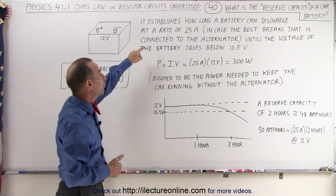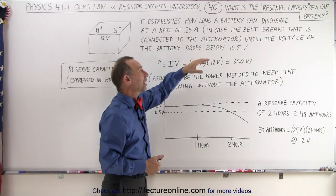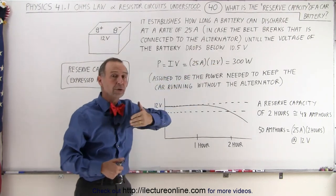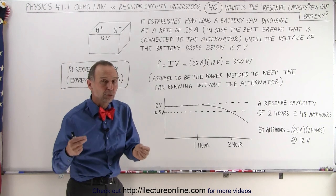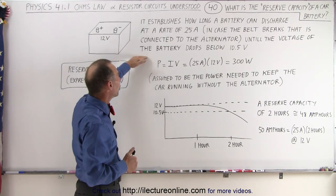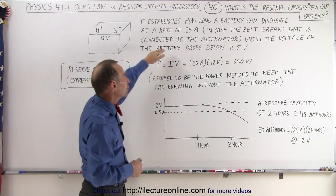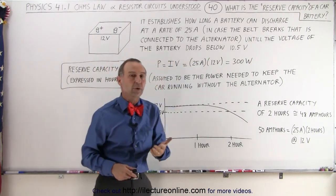So it's assumed that to do that, you need 25 amps. And if the alternator can no longer provide that charge or current, the battery will do so for a certain amount of time until the voltage of the battery drops below 10.5 volts.